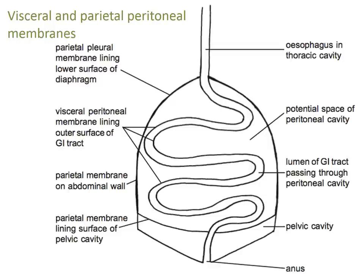The inside of the gut is labelled as the lumen of the gastrointestinal tract, passing through the peritoneal cavity. Below we have the pelvic organs underneath the parietal peritoneal membrane, and the anus going out of the pelvic cavity. The gut passes through the thoracic, abdominal, and pelvic cavities as a continuous tube. Inside that tube there are bacteria; outside it, in the potential space of the peritoneal cavity, it is completely sterile. If anything gets from the lumen of the gut into the peritoneal cavity, that causes potentially life-threatening peritonitis.